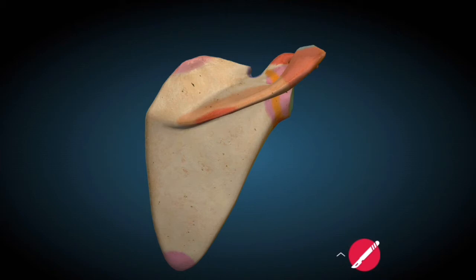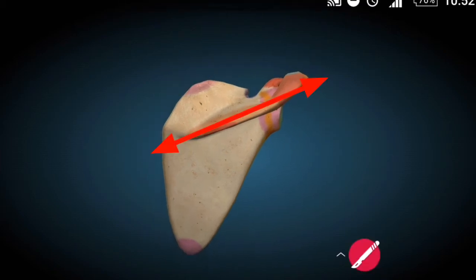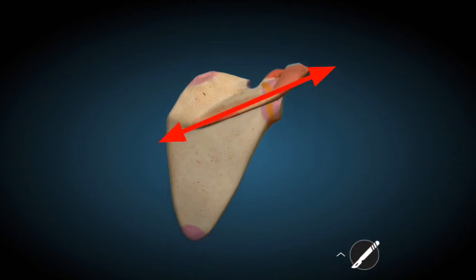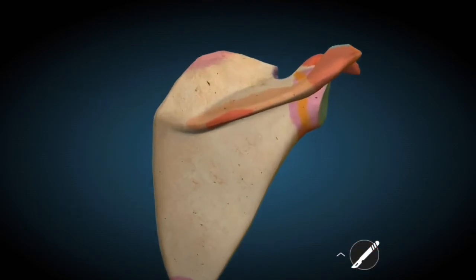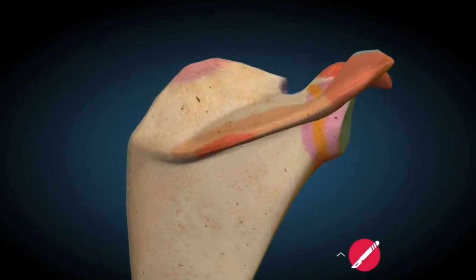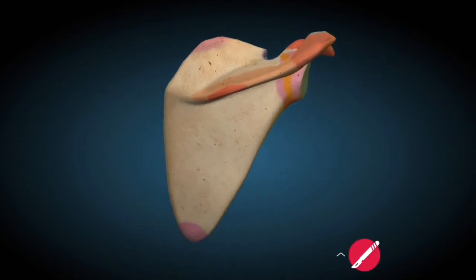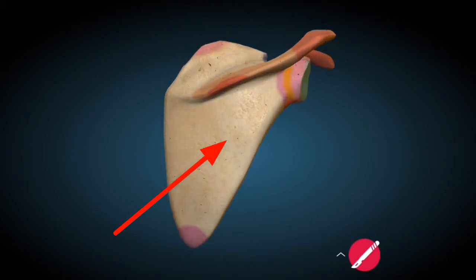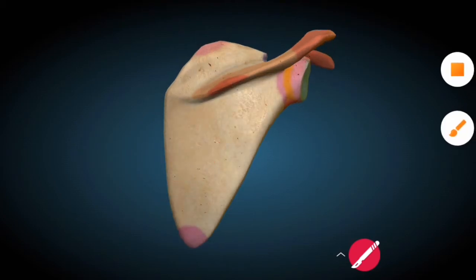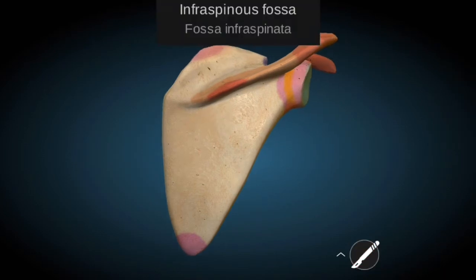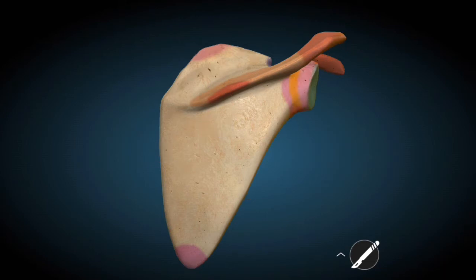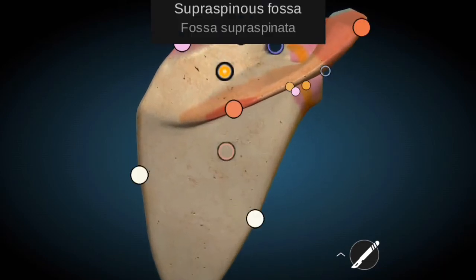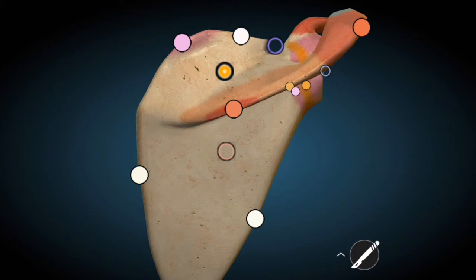On the dorsal aspect of the Scapula Bone, the spine of the Scapula divides the bone into two regions. The region above the spine of the Scapula is called the supraspinatus fossa, and the area below the spine of the Scapula is called the infraspinatus fossa.